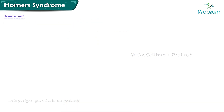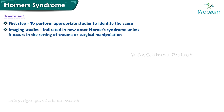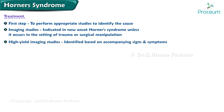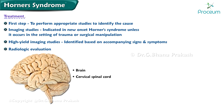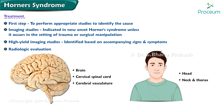The first step in the management of a patient with Horner syndrome is to perform appropriate studies to identify the cause. Imaging is often indicated in new-onset Horner syndrome unless it occurs in the setting of trauma or surgical manipulation. High-yield sites of imaging can be identified based on accompanying signs and symptoms, and may include radiologic evaluation of the brain, cervical spinal cord, cerebral vasculature, head, neck, and thorax. Treatment depends on the etiology of Horner syndrome.